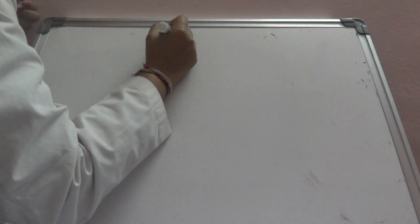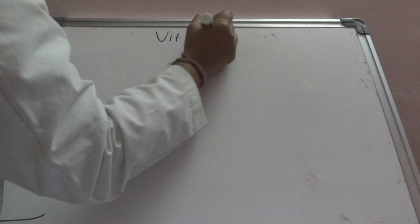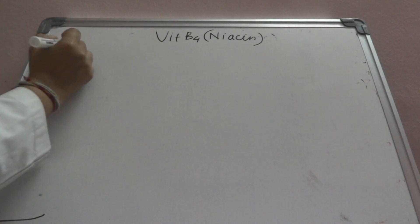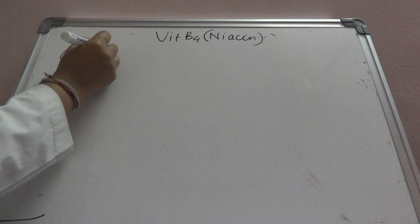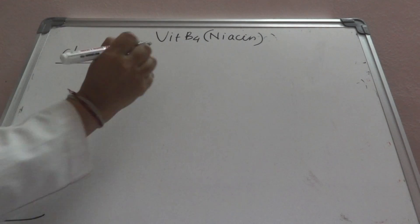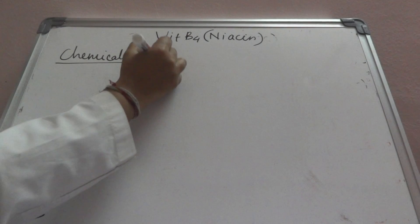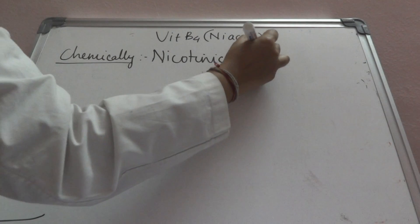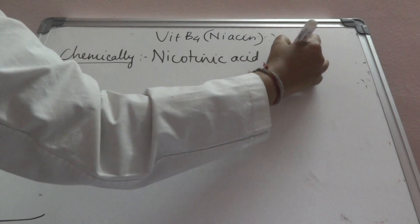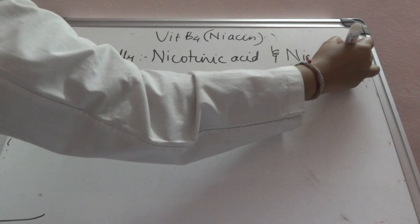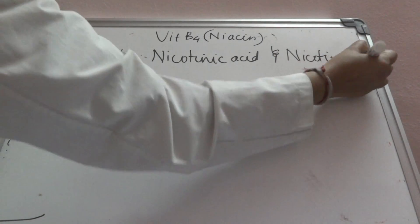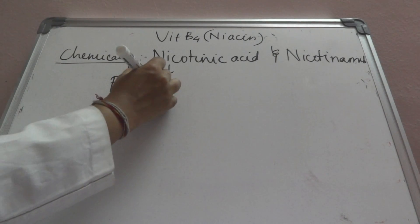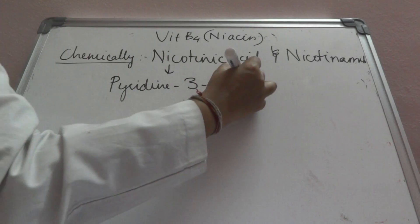Hi everybody. Today we discuss vitamin B3, that is called niacin. The chemical name is nicotinic acid and nicotinamide. This nicotinic acid is a pyridine-3-carboxylic acid.